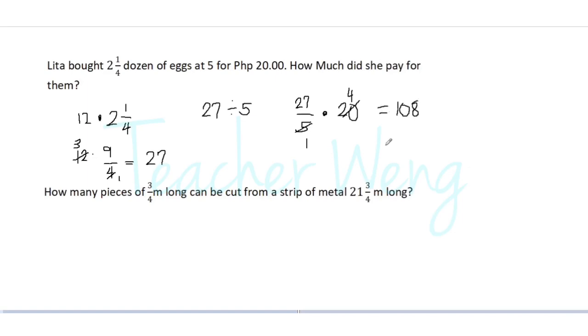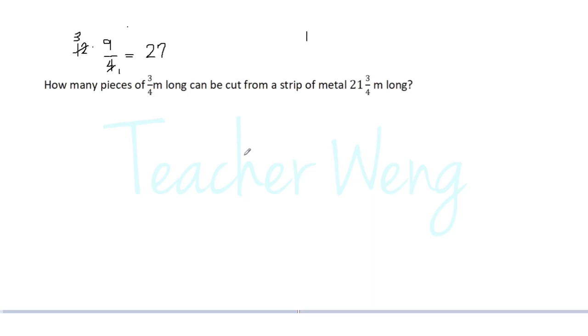So the price of twenty-seven eggs is one hundred eight pesos. Let us proceed to our second and final example. How many pieces of three-fourths meter long can be cut from a strip of metal twenty-one and three-fourth meter long?